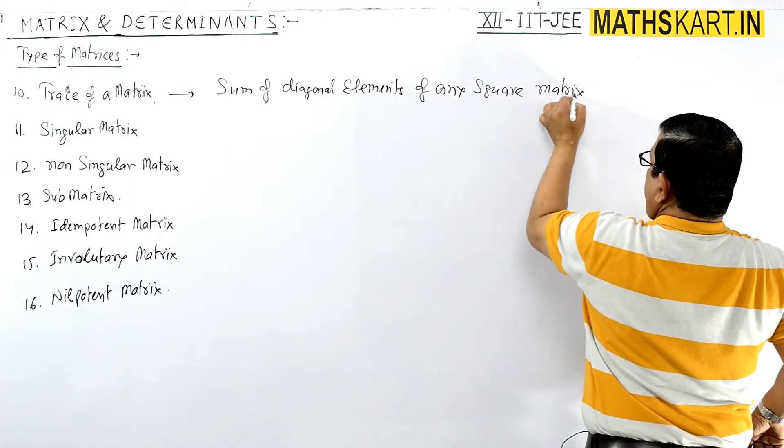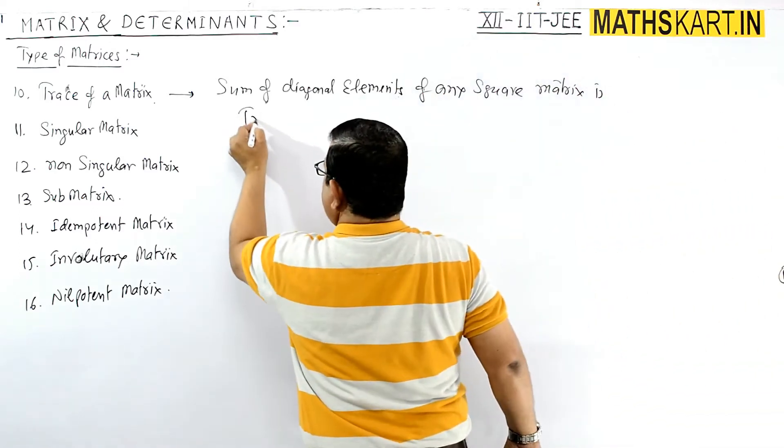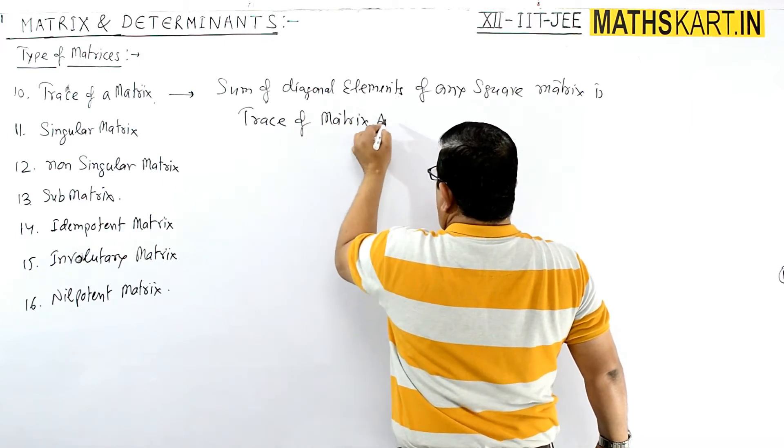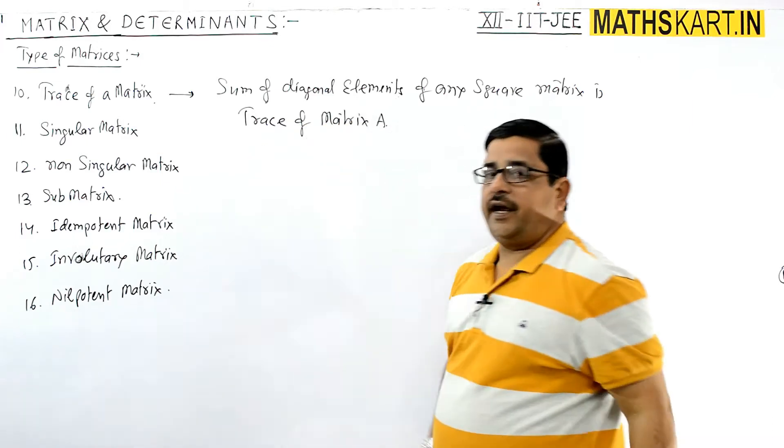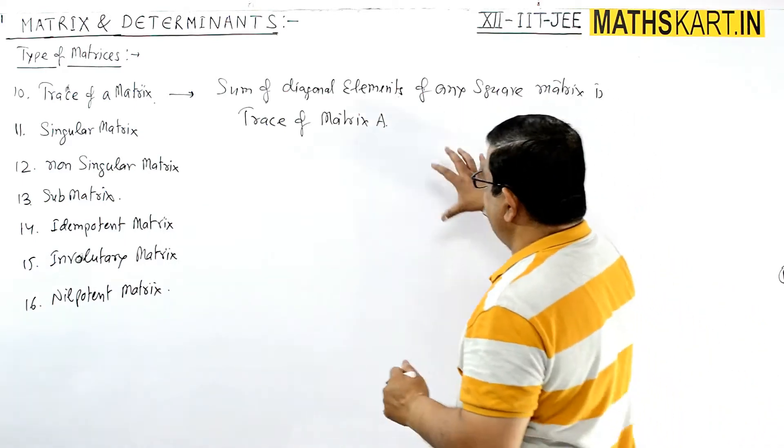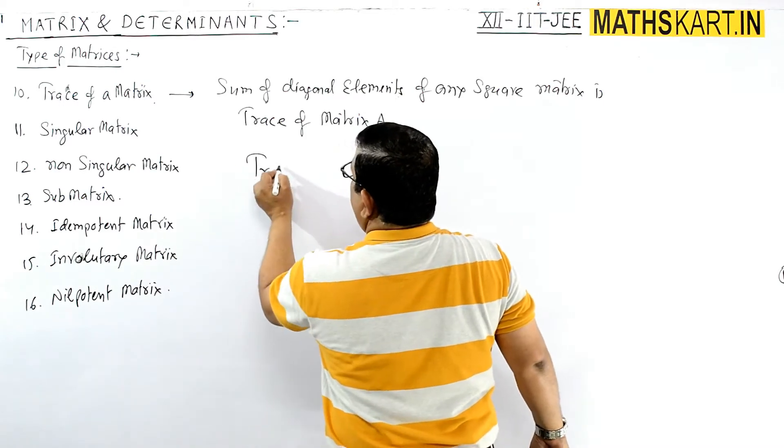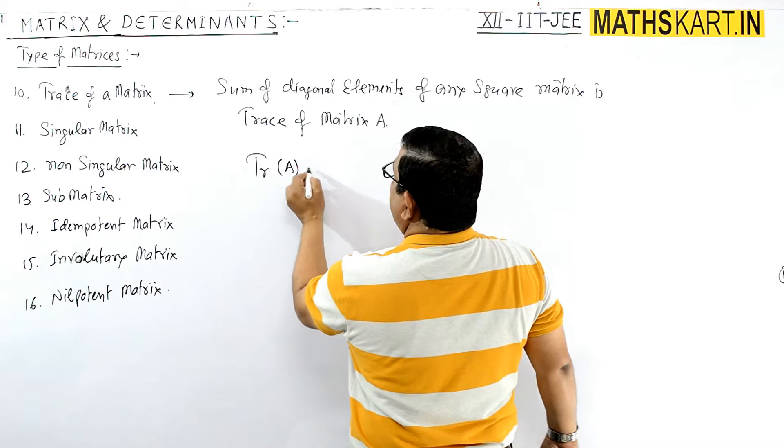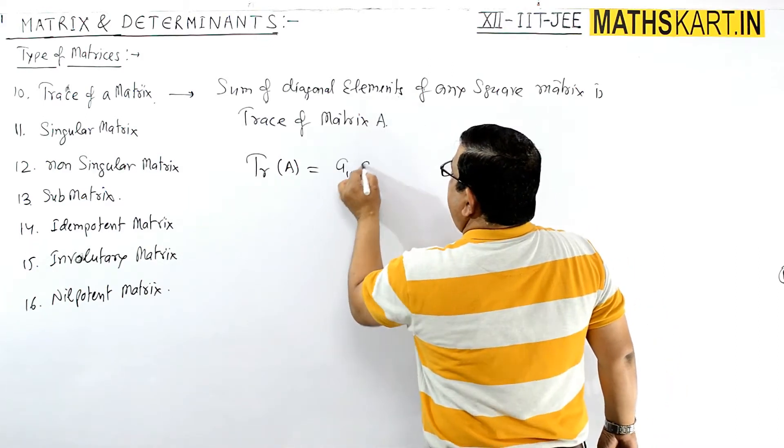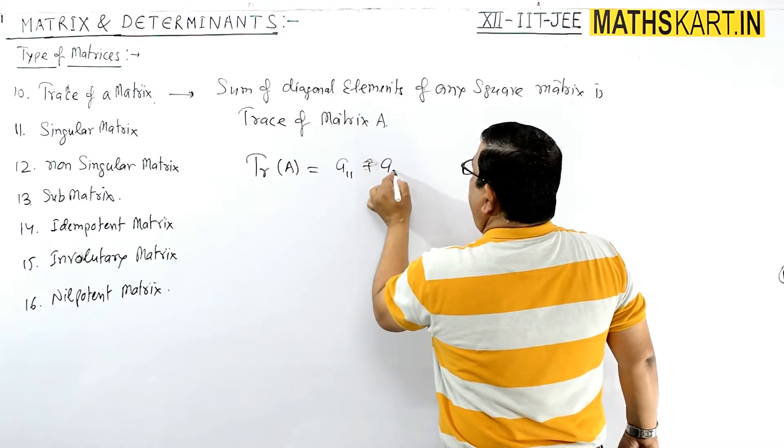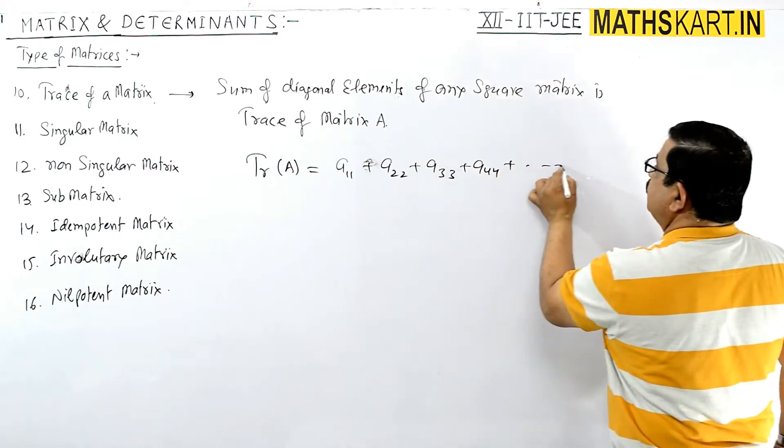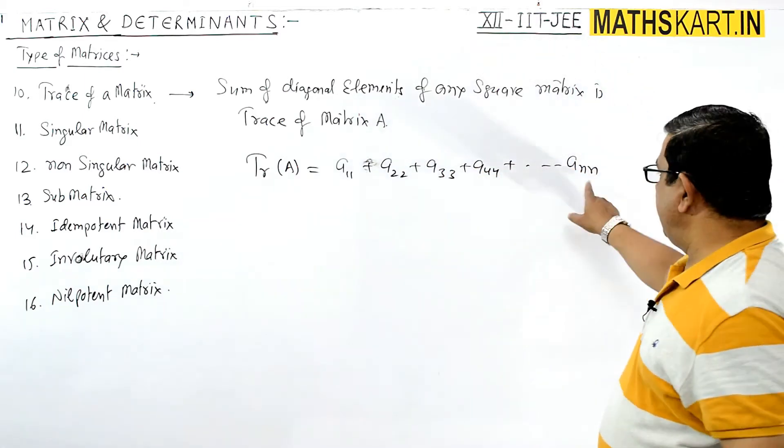Trace of matrix A, suppose the matrix A given, that should be a square matrix, otherwise it is not diagonal. So this is the diagonal elements. To add the trace of A, this is the trace of A, and we have to add all the diagonal elements: A11 plus A22, A33 plus A44, and up to suppose ANN.